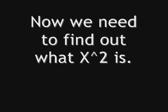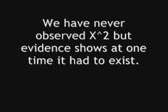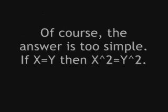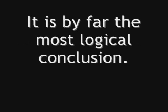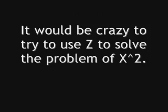Now we need to find out what X squared is. We have never observed X squared, but evidence shows that at one time it had to exist. None of this has been observed, but doing the math, if we needed to relate X squared to either Y or Z, which would you use? Of course, the answer is too simple. If X is equal to Y, then X squared would be equal to Y squared. It is just that simple — it is by far the most logical conclusion. It would be illogical and irrational to use Z, since Z never relates to X. It would be crazy to try to use Z to solve the problem of X squared.